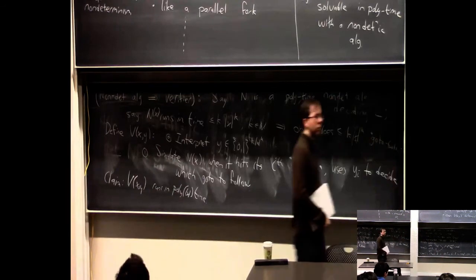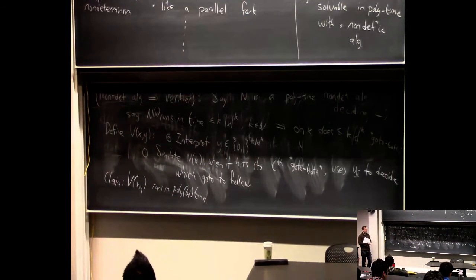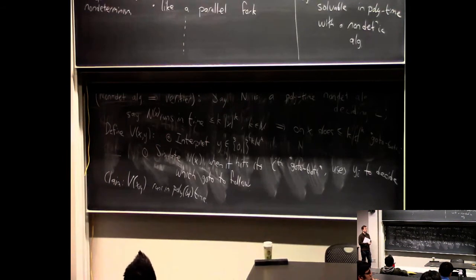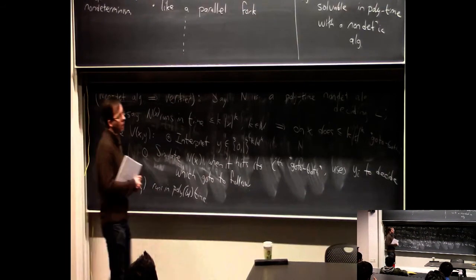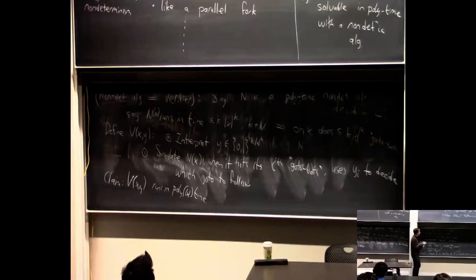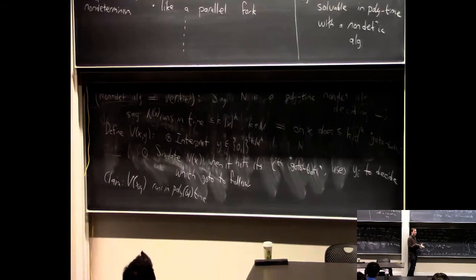Regarding a student's question about space: anything decidable by a non-deterministic Turing machine is decidable by a normal machine — you can simulate this with a normal algorithm, it'll just be exponentially slower. And anything accepted in polynomial time by a non-deterministic machine is in NP — which equals NP. On your homework, you'll show that all those languages are in exponential time. So anything you can decide with a non-deterministic algorithm in such and such time, you can decide by a normal algorithm in exponential of that amount of time.